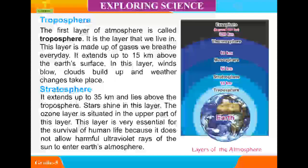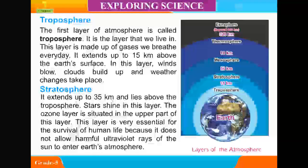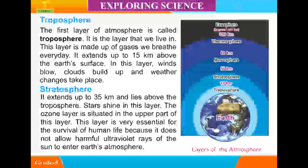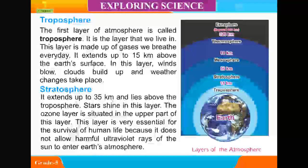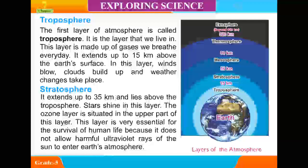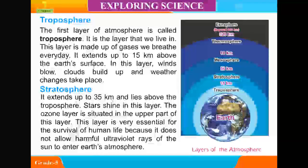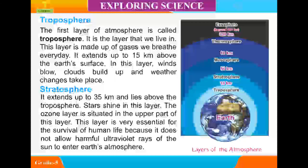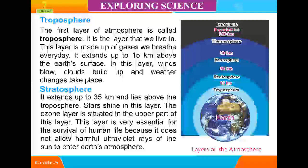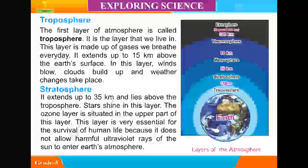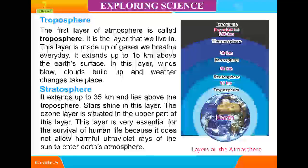The stratosphere extends up to 35 km and lies above the troposphere. Stars shine in this layer. The ozone layer is situated in the upper part of this layer. This layer is very essential for the survival of human life because it does not allow harmful ultraviolet rays of the sun to enter the earth's atmosphere.